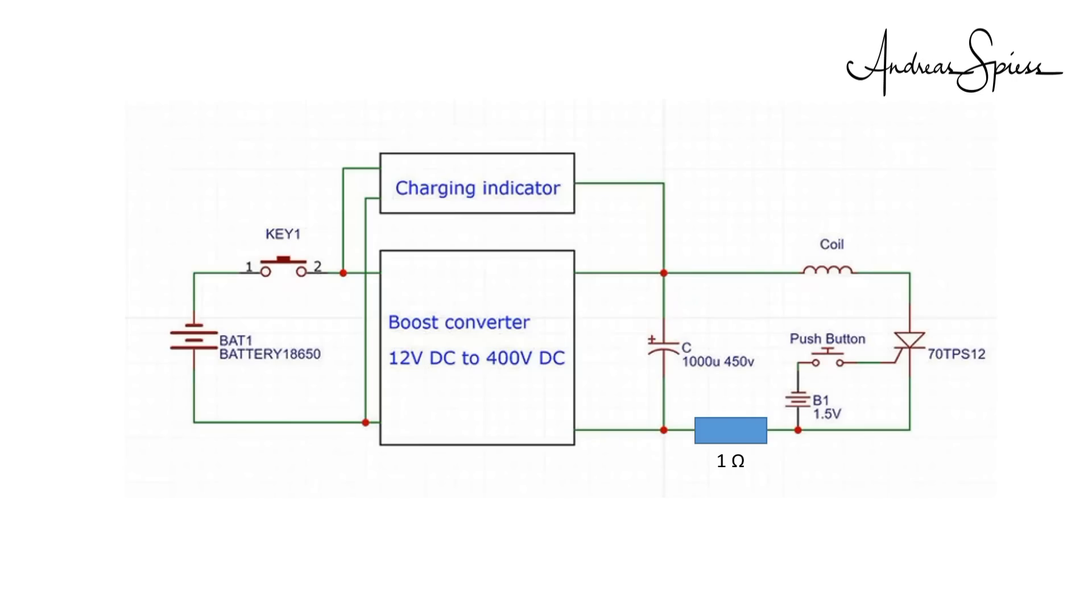I also had to add a switch to shut the DC converter down as soon as the capacitor was charged. Thyristors only stop to conduct at very low current levels, so it just stops conducting if the capacitor is completely discharged. But with the running converter connected to the capacitor, it never discharges completely, which created a short through the coil and kept the thyristor always on. This switch on the primary side of the DC converter solved the problem.